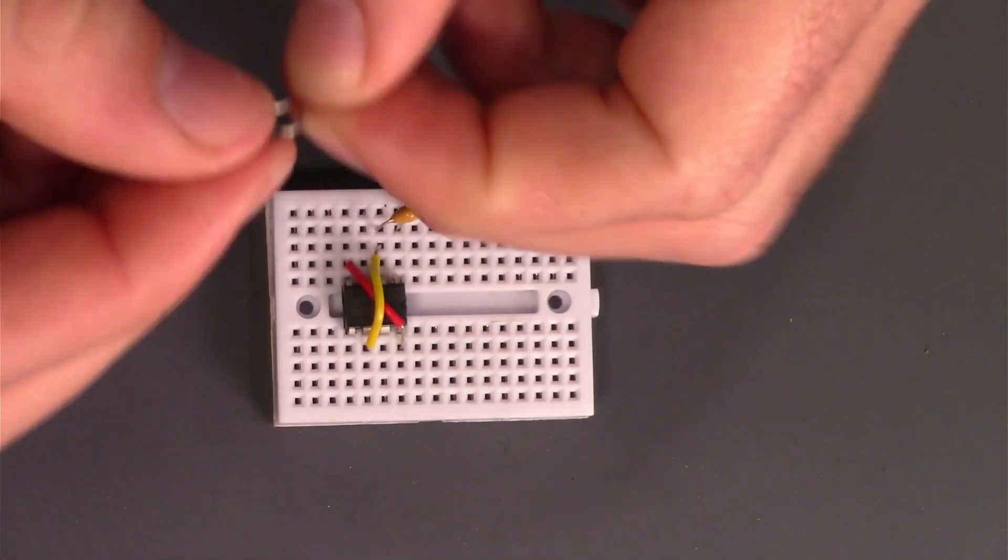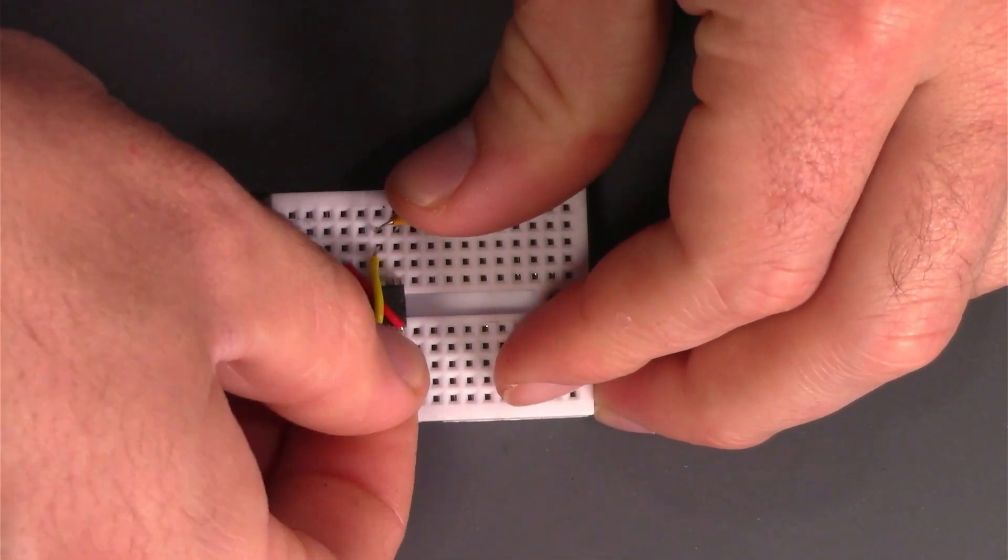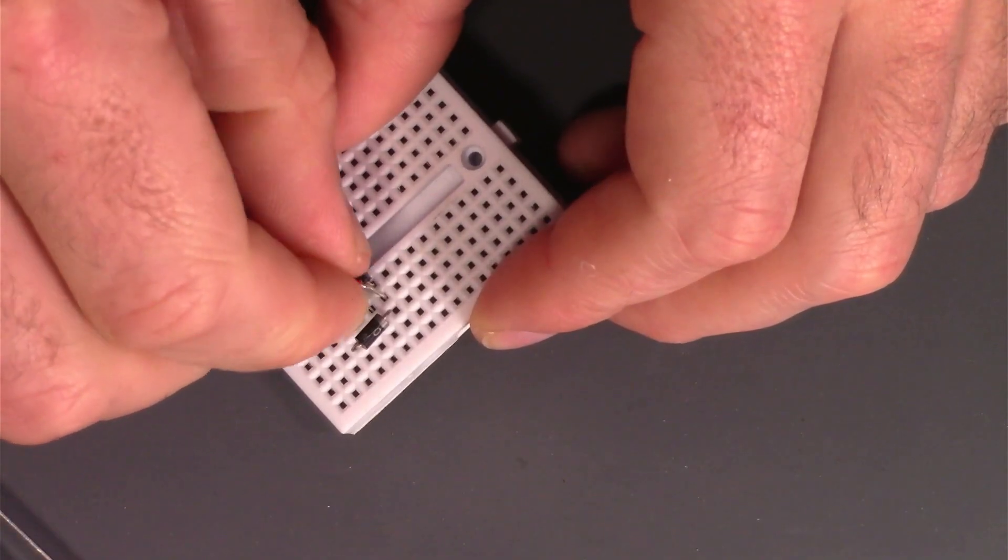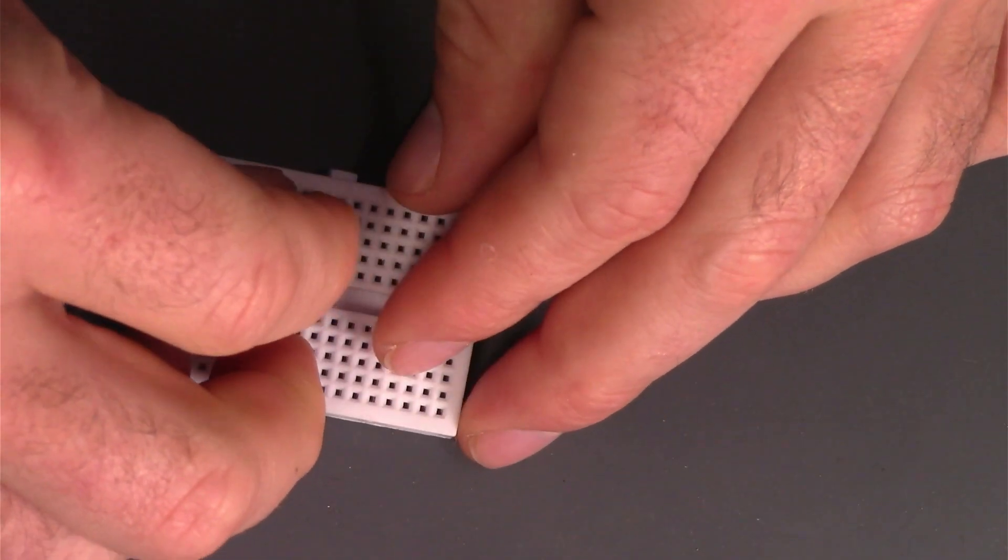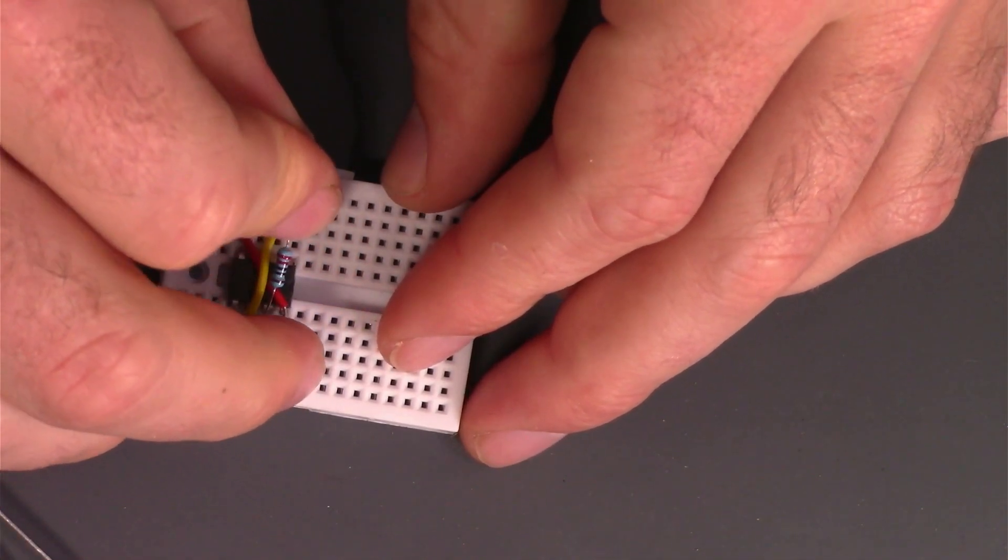Now I'll add a diode from position seven to position six. Cathode in seven, anode in six. Now I'll plug in a 220 ohm resistor in positions two and position seven.